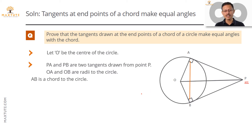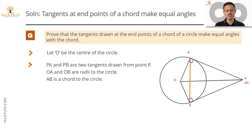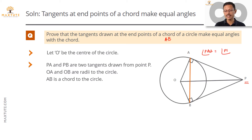The chord we are talking about is AB, so the two tangents PA and PB have been drawn at the endpoints of chord AB. What we need to prove is that angle PAB is equal to angle PBA — that is our objective.